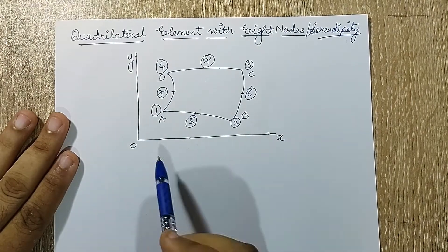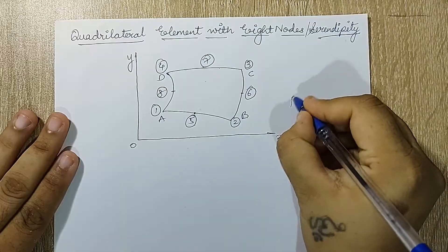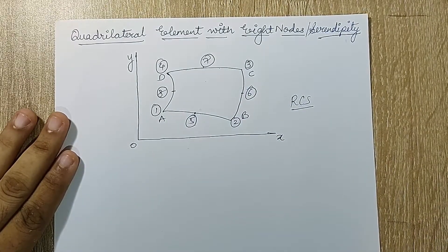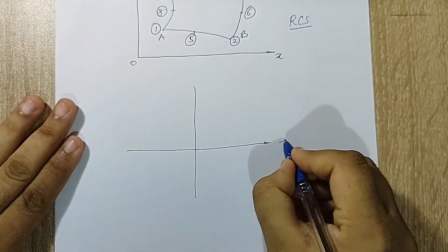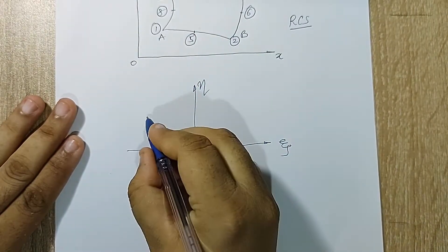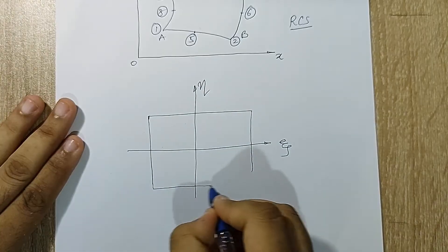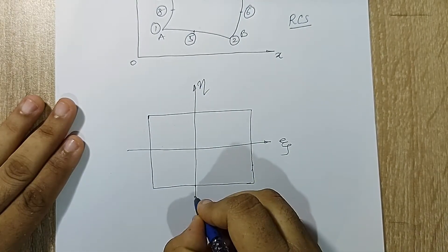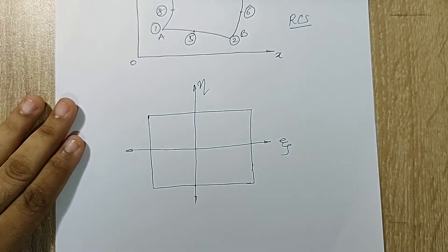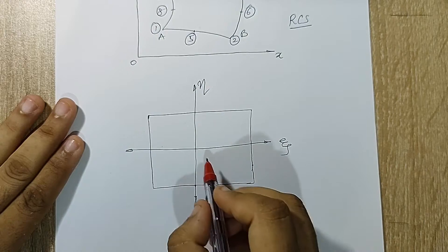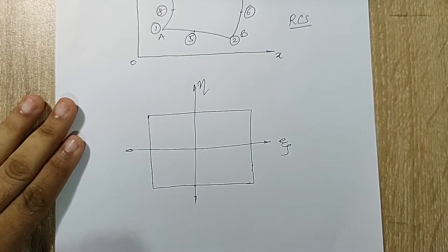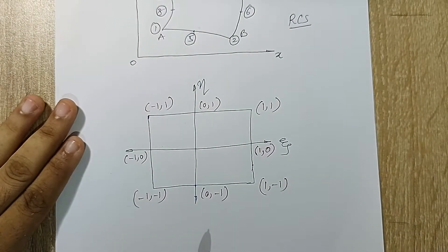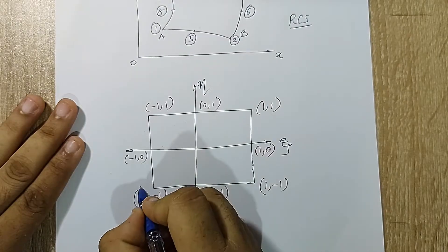This is the diagram which is given to me — a quadrilateral with 8 nodes in rectangular coordinate system. I will first transfer this to natural coordinate system. For that, I will draw my two axes: the zeta axis and the eta axis, with my quadrilateral over here. We start with 0,0 at the center, walk a distance of unity, and mark all the coordinates. Here I have filled up all the coordinates — I have not written 0,0 because it is not required. I need 8 nodes and these are enough.